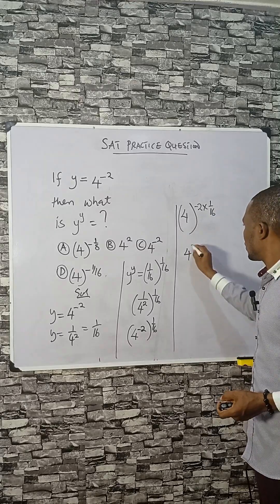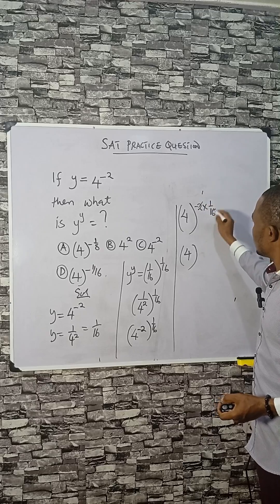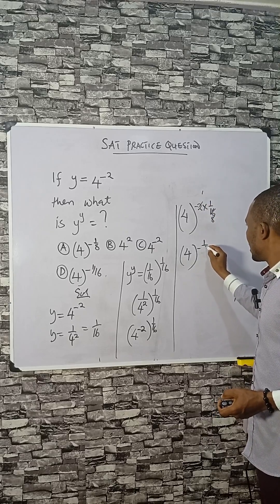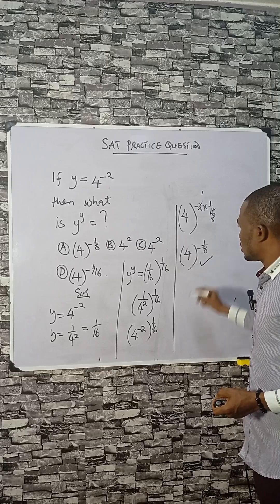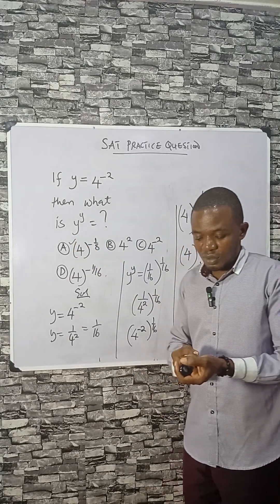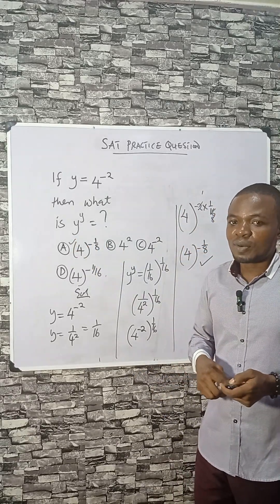This can cancel, so minus 1 over 8 is the answer, and that is option A. Very simple. Like and share. Bye bye.